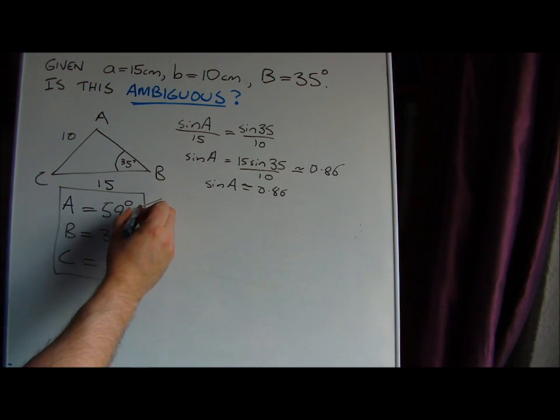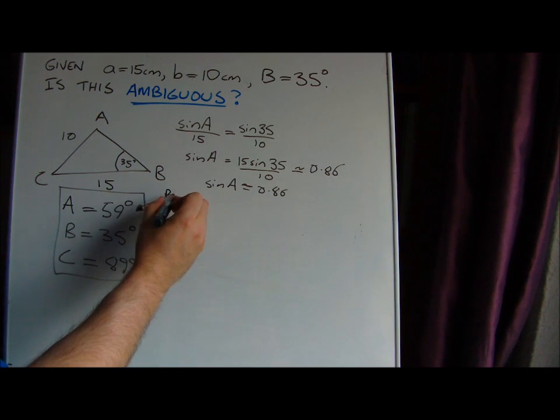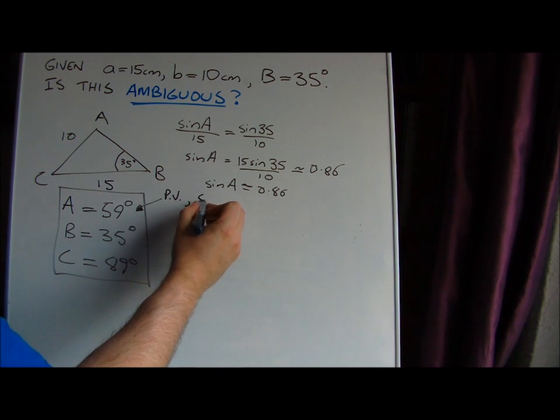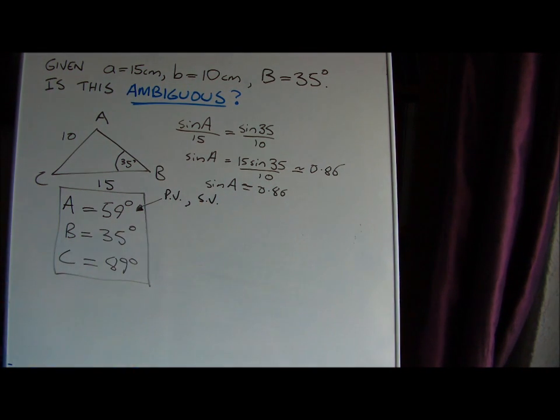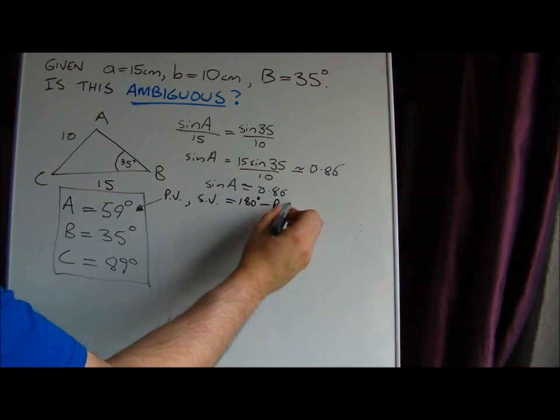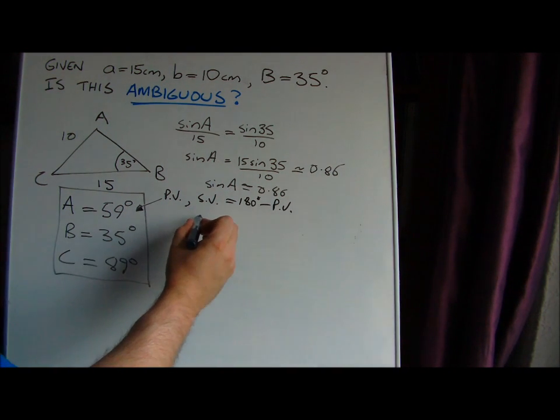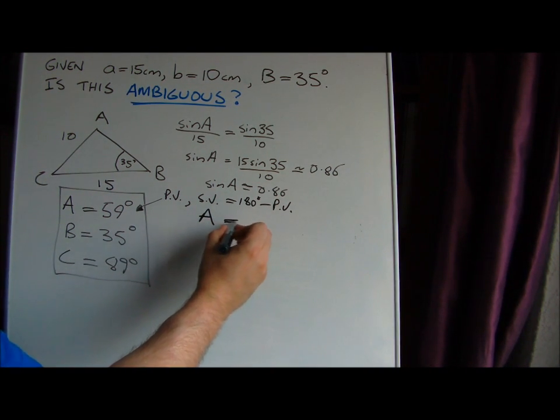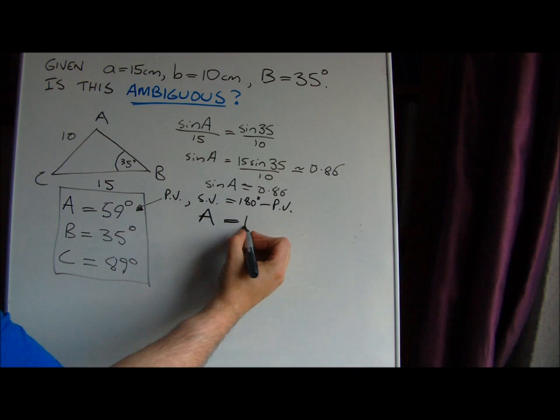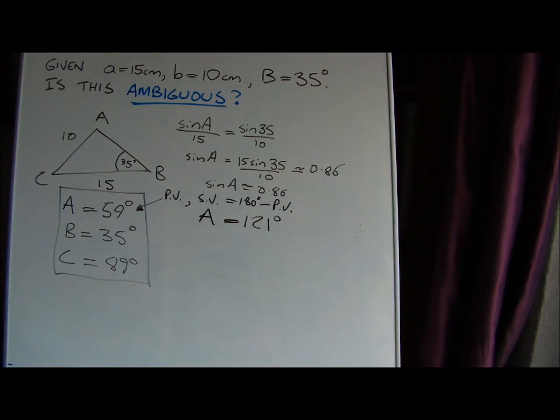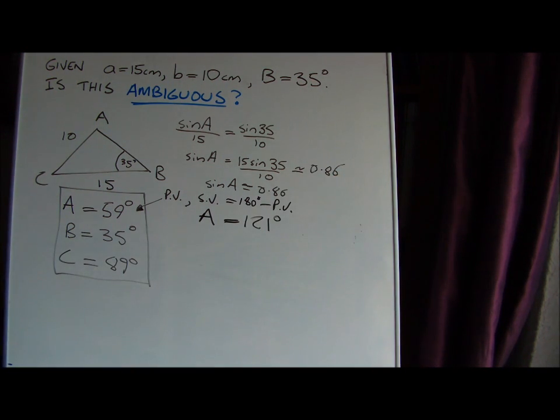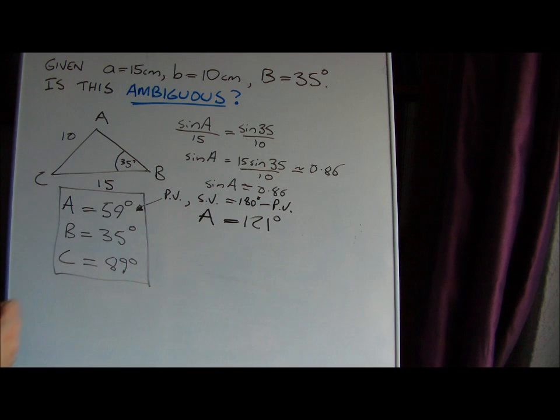Now this value that we calculated with the calculator was the principal value, but there's another one that your calculator doesn't give you. We should also check the secondary value. The secondary value is just 180 degrees minus the principal value. So that means there's an alternative value for angle A - 180 minus 59 degrees. Another possible angle is 121 degrees. If you check, sine of 121 is also about 0.86.